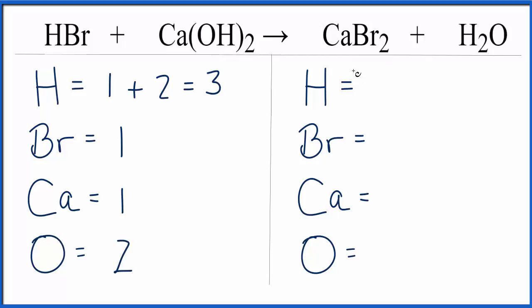Over on the product side, hydrogens, we have the two. Bromines, we have two. Calcium's one. And oxygens, one. So things are not balanced here.